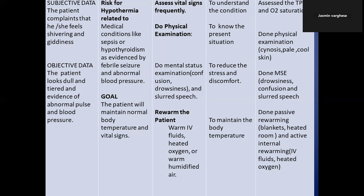In the next column, write the diagnosis and the goal. For example: hypothermia related to medical conditions as evidenced by febrile seizures and abnormal blood pressure. The goal is that the patient will maintain normal body temperature and vital signs — specifically 36.5 to 37.5 degrees Celsius. For planning, first do history collection and physical examination, and check vital signs frequently to understand the general condition of the patient.